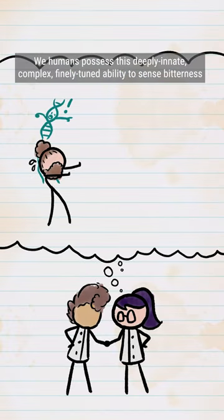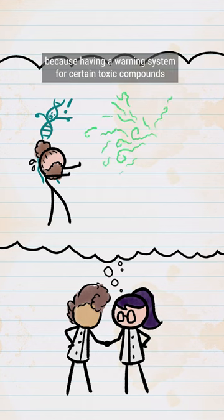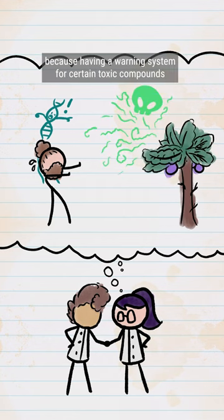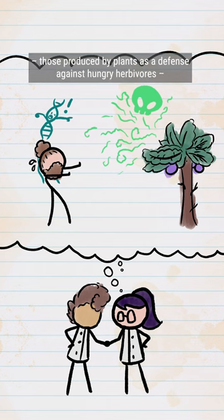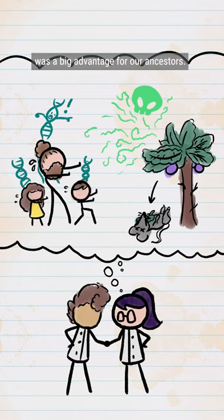We humans possess this deeply innate, complex, finely tuned ability to sense bitterness, because having a warning system for certain toxic compounds, those produced by plants as a defense against hungry herbivores, was a big advantage for our ancestors.